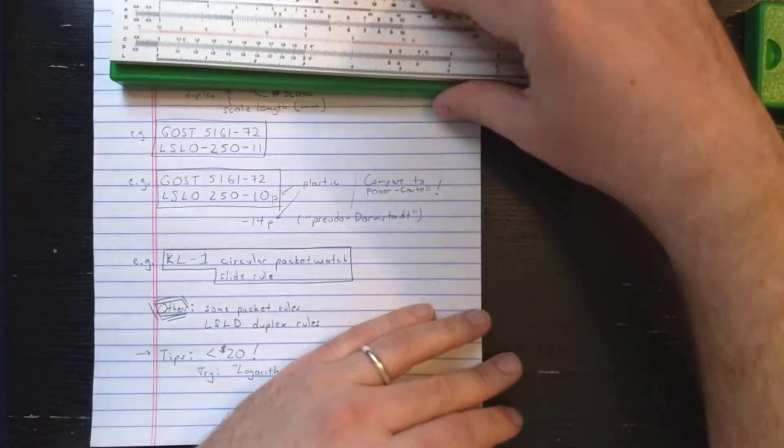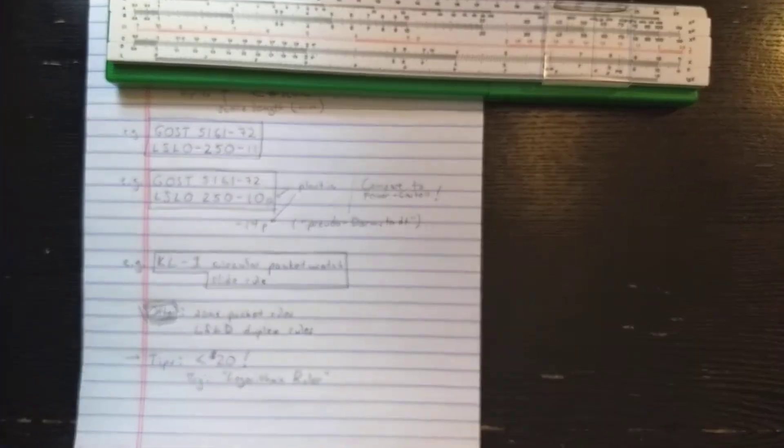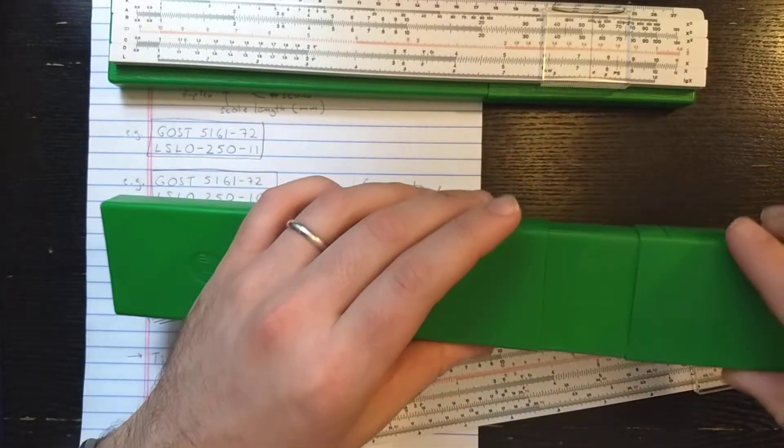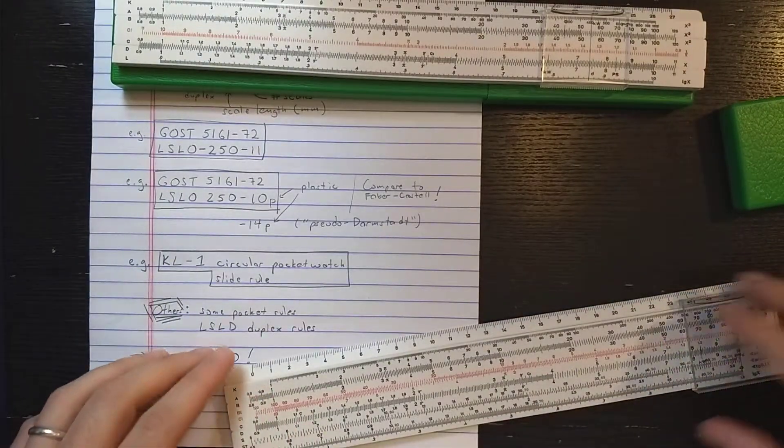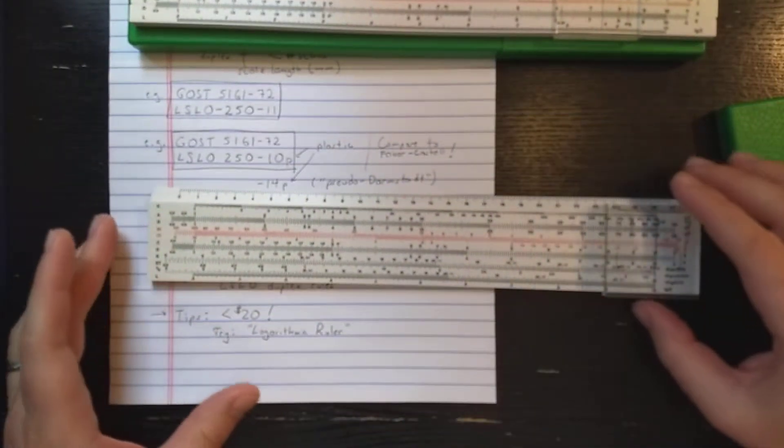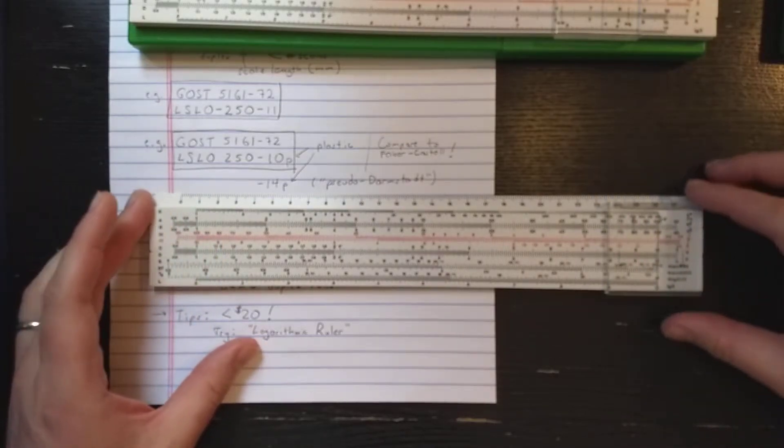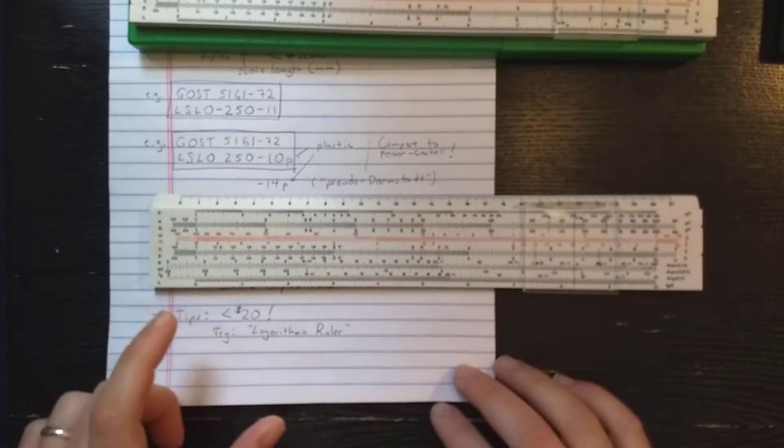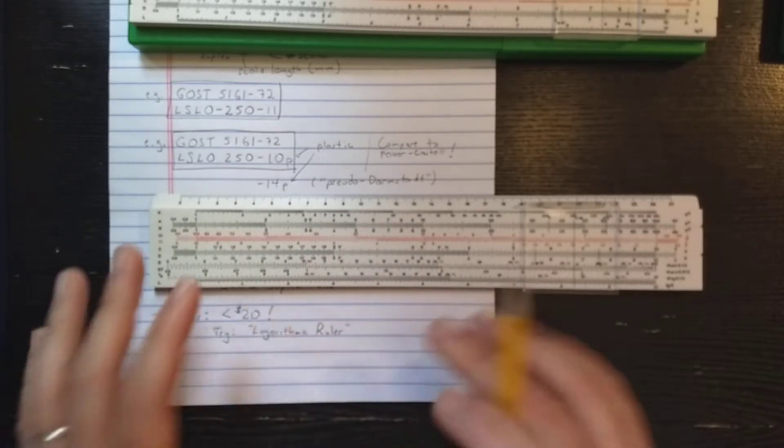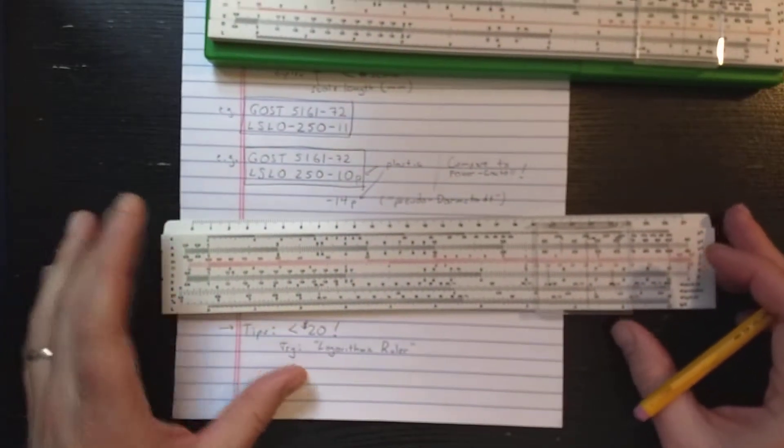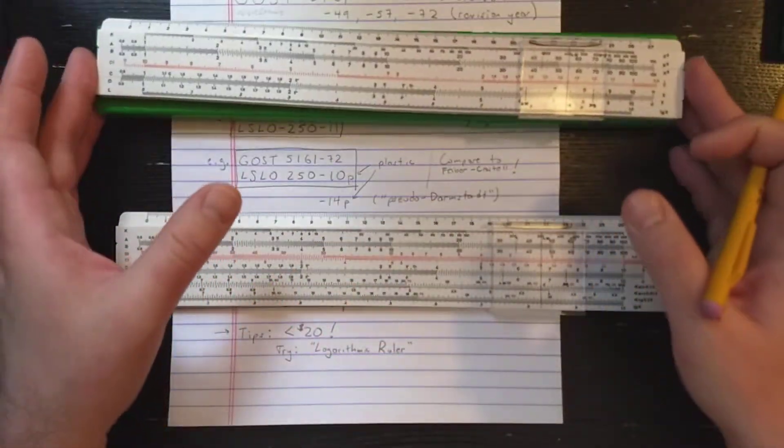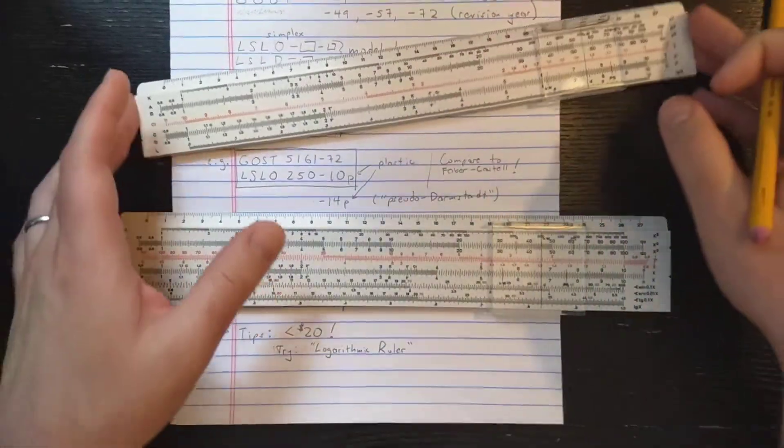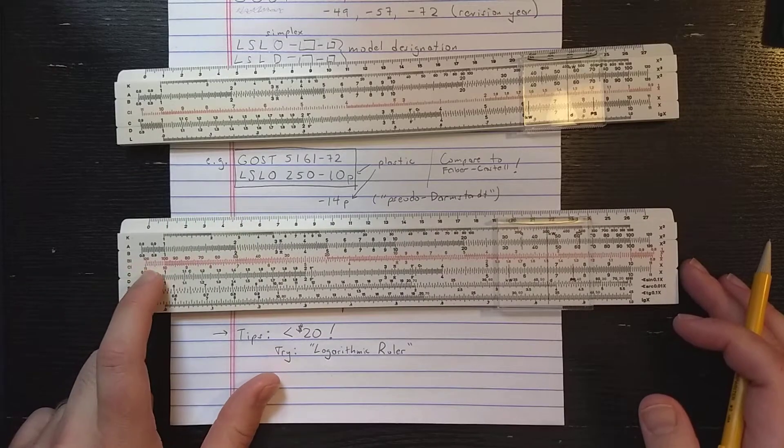This is a really cool slide rule with kind of an interesting provenance. Let's have a look at the other plastic one. So I guess these are from the same factory. There's essentially two different plastic designs. This one is what I want to call a pseudo-Darmstadt design. It's not quite a Darmstadt slide rule. On the front, the difference between this and a Darmstadt slide rule is really that there's no P scale. Instead of a P scale, you get an ST scale. I actually prefer this design to the standard Darmstadt design. My criticism of the standard Darmstadt slide rule is that there should be an ST scale.